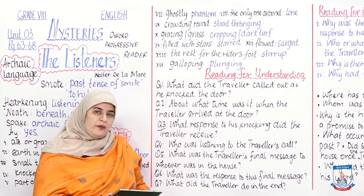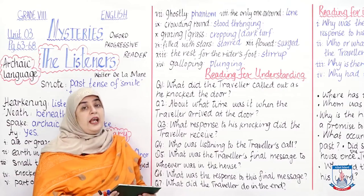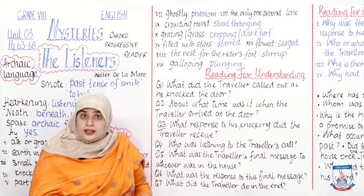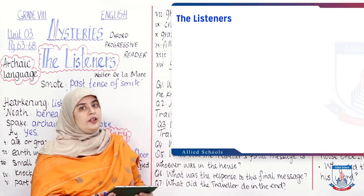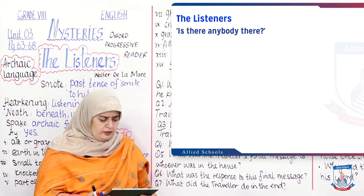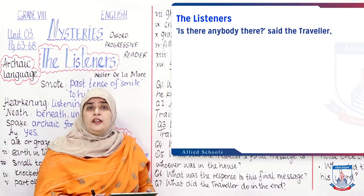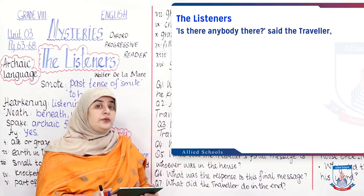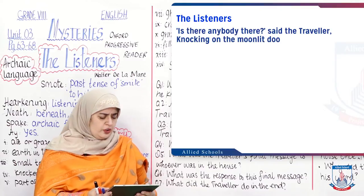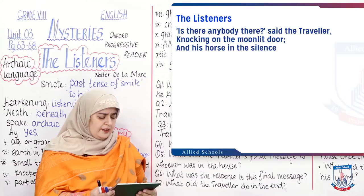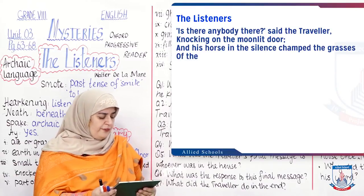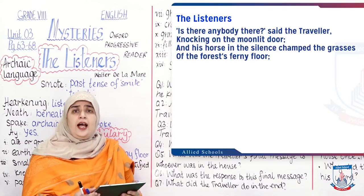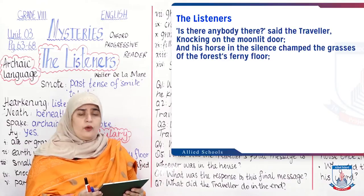Alright, I will now read the poem for you. It's going to appear on your board — open your textbooks and read the poem side by side with me. I'll do the explanations as well so you can understand why this specific poem is used as a comprehension in Unit 3 Mysteries. 'Is there anybody there?' said the Traveller — Traveller has a capital T because his name is not mentioned, so we give him a title. He is knocking on the moonlit door, and his horse in the silence champed the grass of the forest's ferny floor.